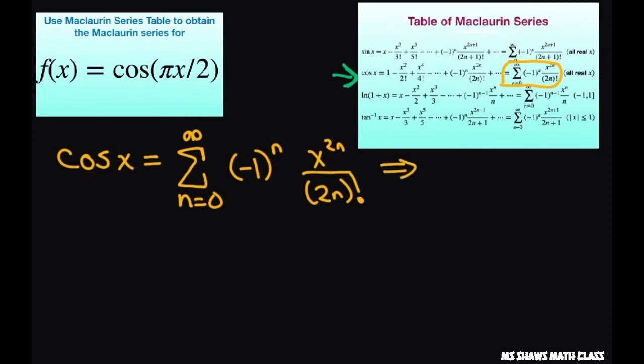Now, what we want to do is find cosine of pi times x divided by 2. So what I'm going to do is substitute this x with pi x divided by 2. So just copy everything down.